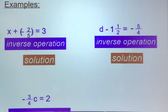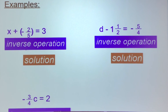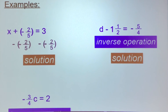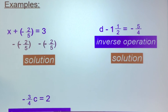Now let's look at examples with fractions. The first one: x plus negative 2/5 equals 3. The variable is not isolated — they're adding negative 2/5, so we subtract negative 2/5 from both sides. On the side with the variable it cancels out, leaving just x. On the right, 3 minus negative 2/5 — using keep-change-change — gives x equals 3 and 2/5.